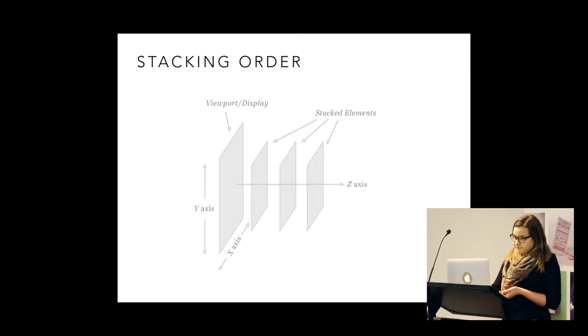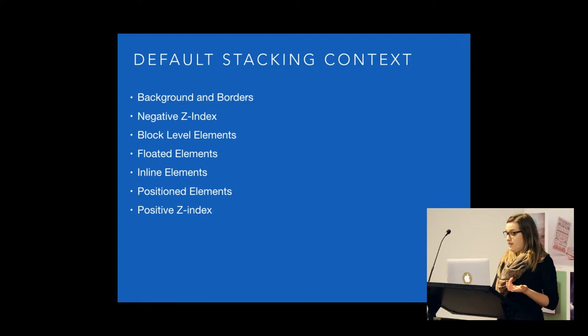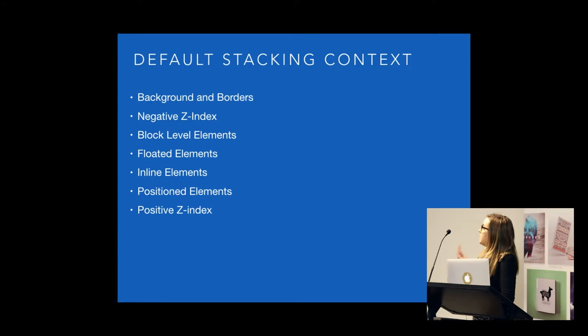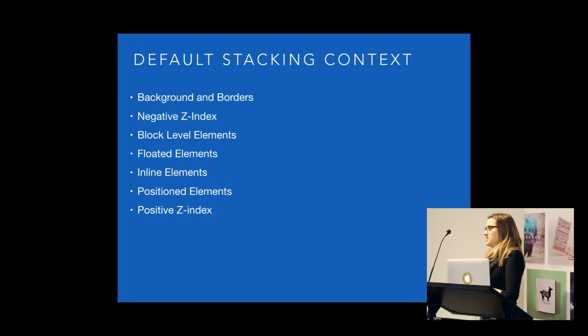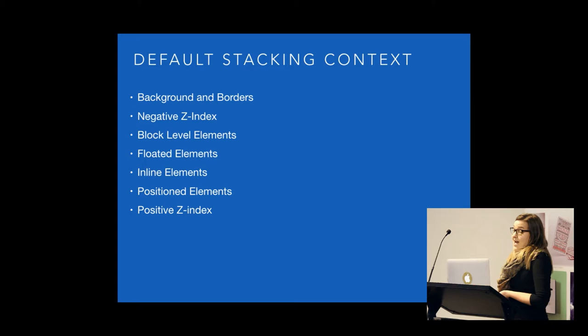We start with a default stacking context — this is where the tricky bit comes in with the Z-Index. We've got our backgrounds and our borders; that's the base of what every element starts with. And then we can actually also set a negative Z-Index, which would be the next in the stacking context. From there we have our in-flow elements: block elements, floated elements, inline, and positioned elements. These don't have a Z-Index, but they do actually come to the top of the stacking order. So if you've got a div and you set a position on it, it's going to go from being at the block level element to coming up in front into one of your positioned elements. And then finally, we have a positive Z-Index.